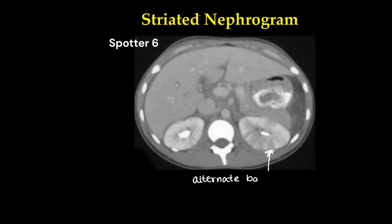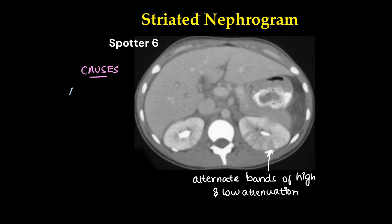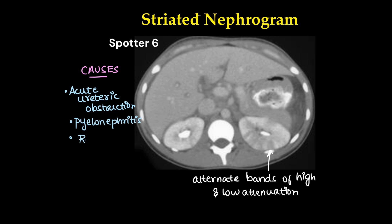This is a striated nephrogram. We can see alternate bands of high and low attenuation on CT, especially in the nephrographic and urographic phase. This happens in acute ureteric obstruction, pyelonephritis, and renal vein obstruction, among many other causes.